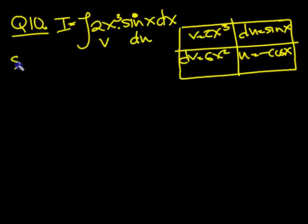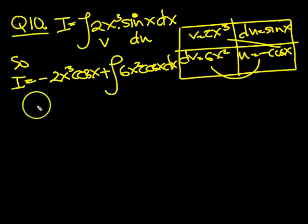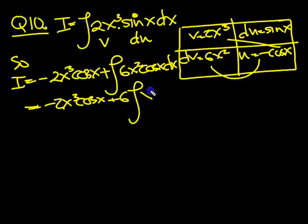So i equals then, it will be uv, those two. So, 2x cubed, minus can come to the front, 2x cubed cos x, minus the integral of u to v. So the minus can come to be with the other minus. We've got 6x squared cos x dx.